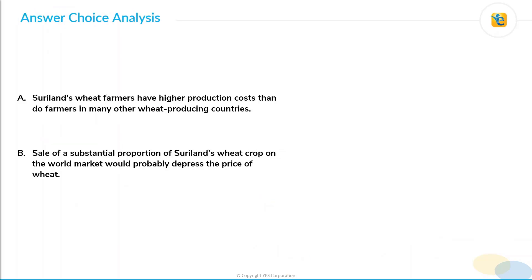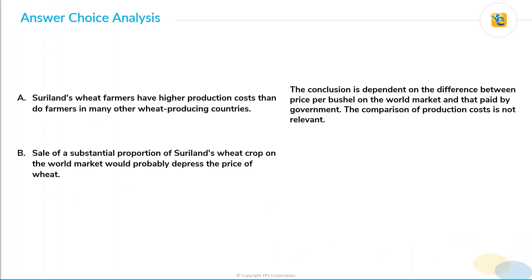With this pre-thinking, let's move to answer choice analysis. Choice A: Suriland wheat farmers have higher production costs than do farmers in many other wheat-producing countries. We already discussed that production cost is not relevant here. The conclusion is dependent on the difference between price per bushel on the world market and that paid by the government — the two different selling prices. The production cost or any comparison of production costs is not relevant. Hence choice A is incorrect.